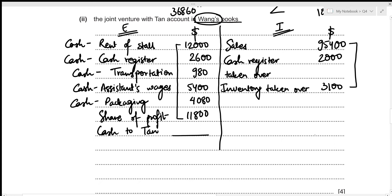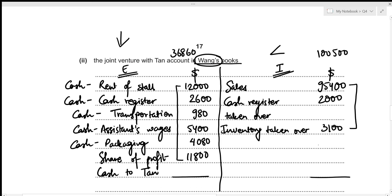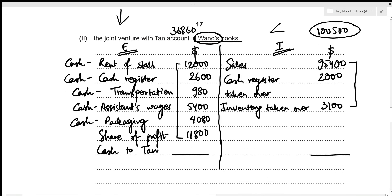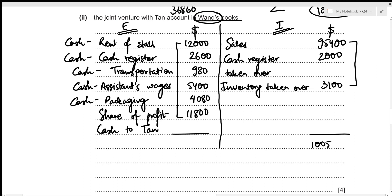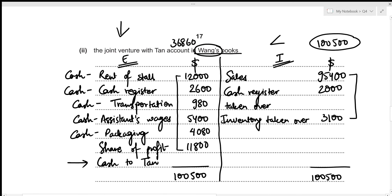The balancing figure — cash owed by Wang to Tan — is calculated as 100,500 − 36,860 = 63,640. This means Wang owes 63,640 to Tan. This concludes the second part of the question.